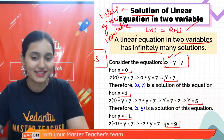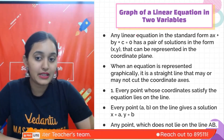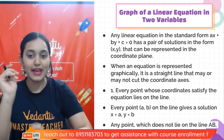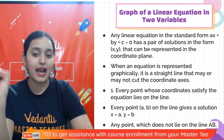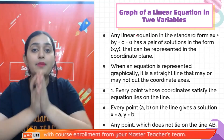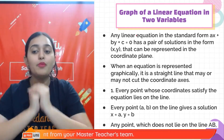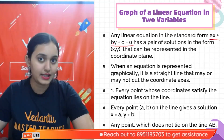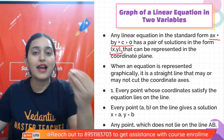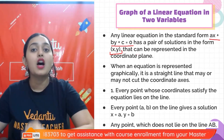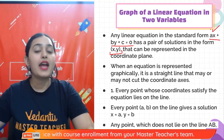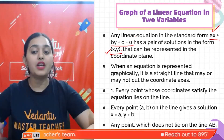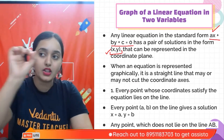Now, what kind of graph is obtained for a linear equation in two variables? We already learned in coordinate geometry how to plot points. We take ax + by + c = 0 and find values of x and y for which LHS equals RHS — that is, we find solutions. We plot a few of these solutions on the Cartesian plane and join them with a pencil and scale to form a straight line.